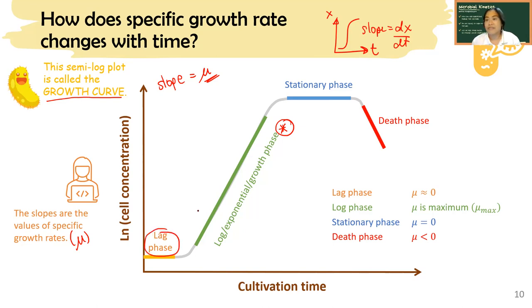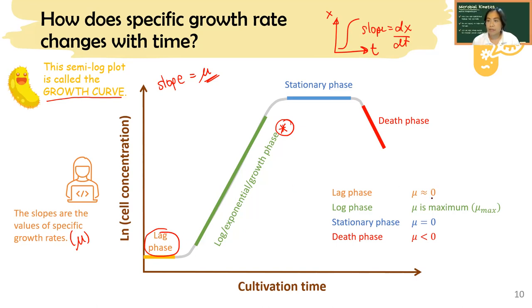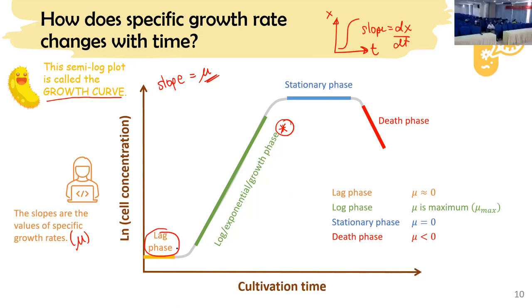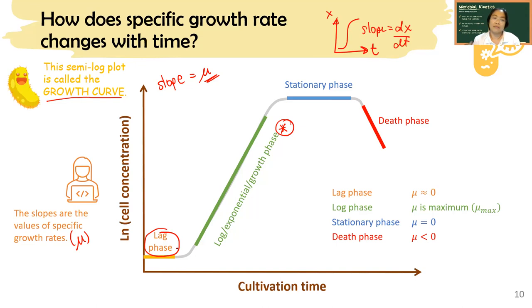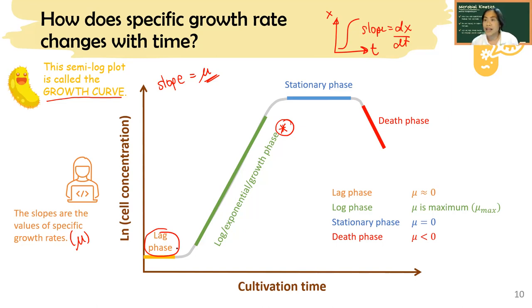The first part is what we call the lag phase. In the lag phase, the specific growth rate μ is approximately zero, so there's no change in cell growth. If you are cultivating a cell of a typical type, you start by inoculating the cells into your fermentation. It is possible that the cell has to adapt to the new environment and it divides itself very slowly — that's when you have the lag phase, where μ is approximately zero.